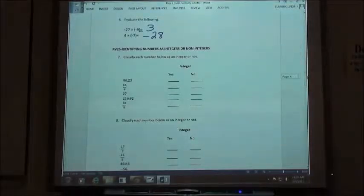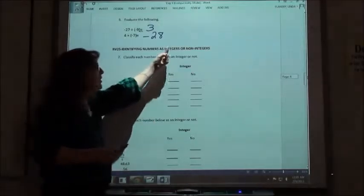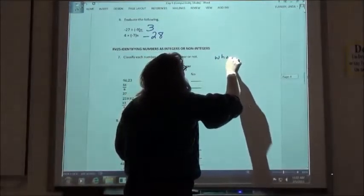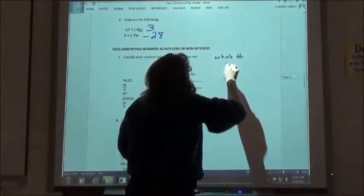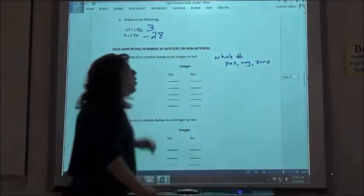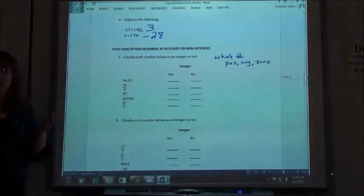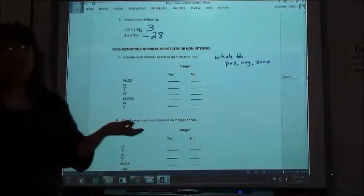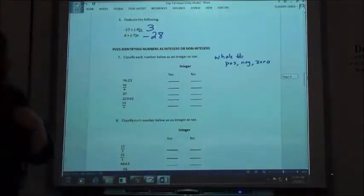So next one, identifying numbers as integers or non-integers. An integer is just a fancy math word for a whole number that can be positive, negative, or it can be zero. Whole numbers technically are only positive. By definition, if I say a whole number, I'm only talking about positive numbers. That's why they use the word integer.